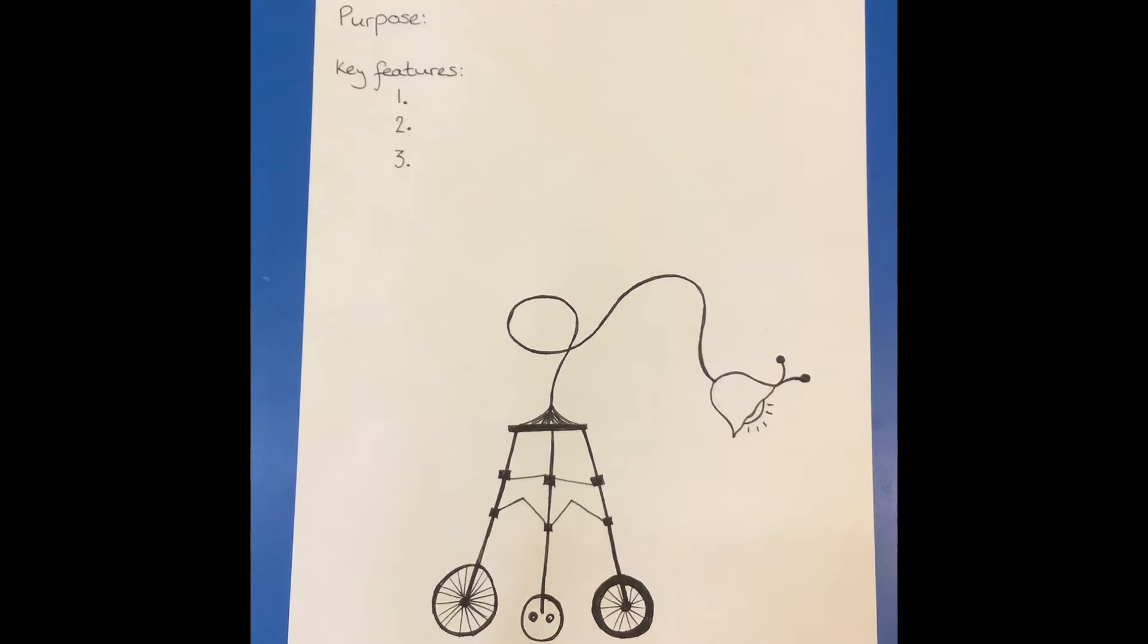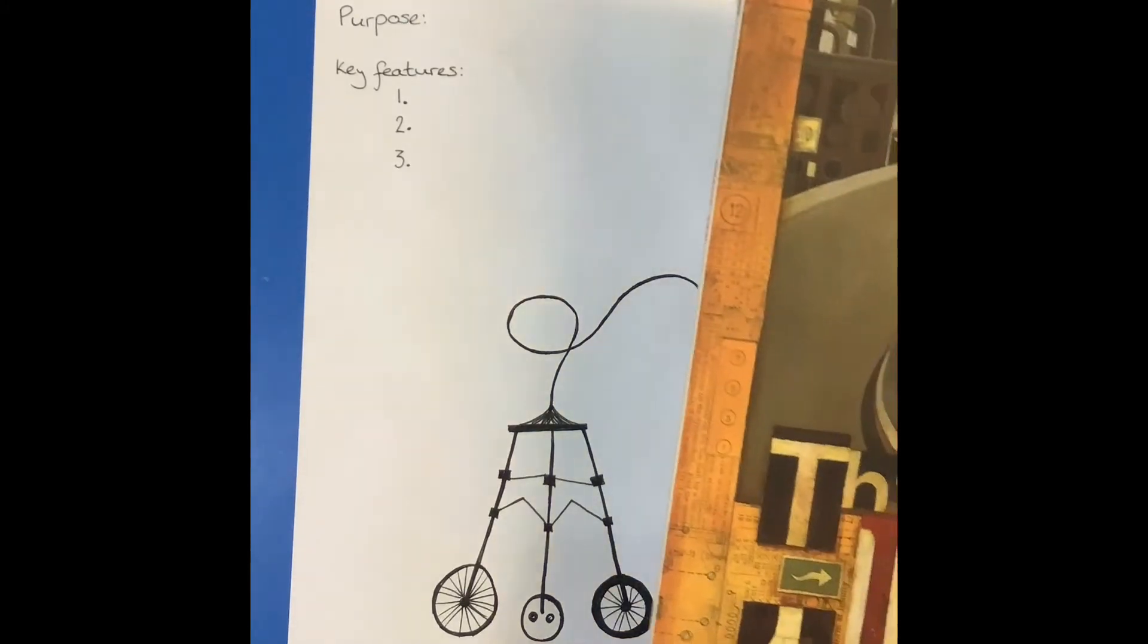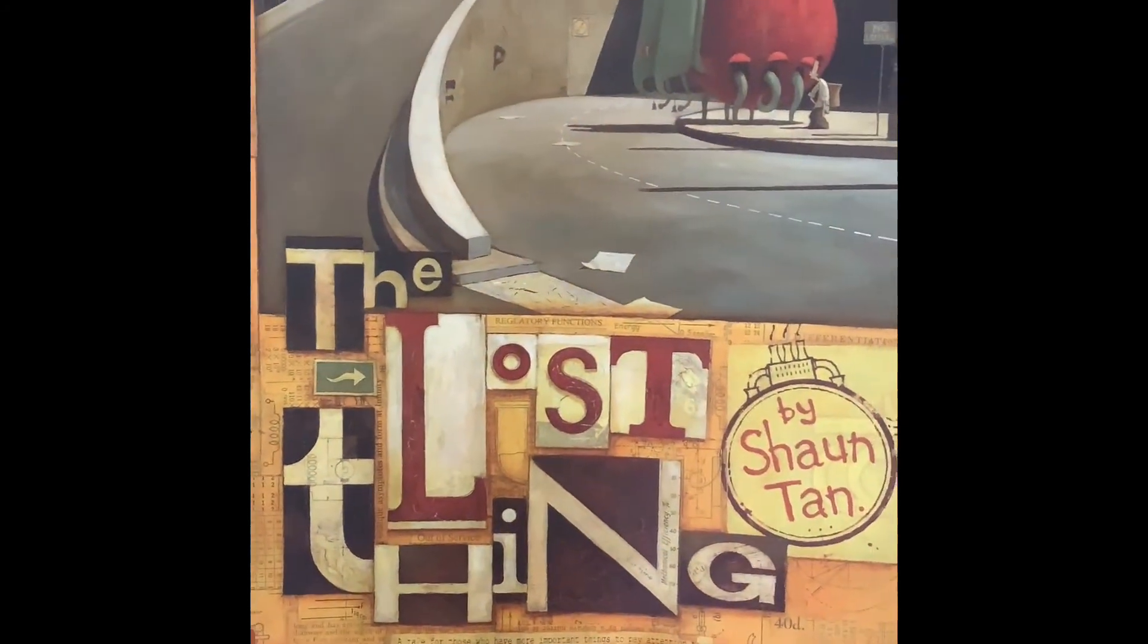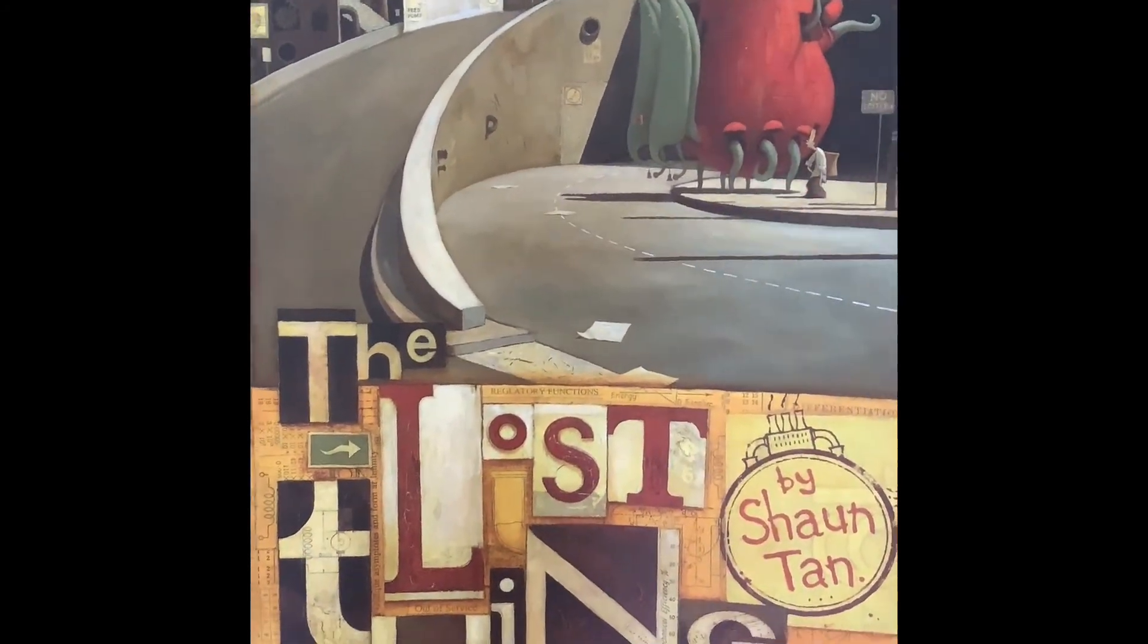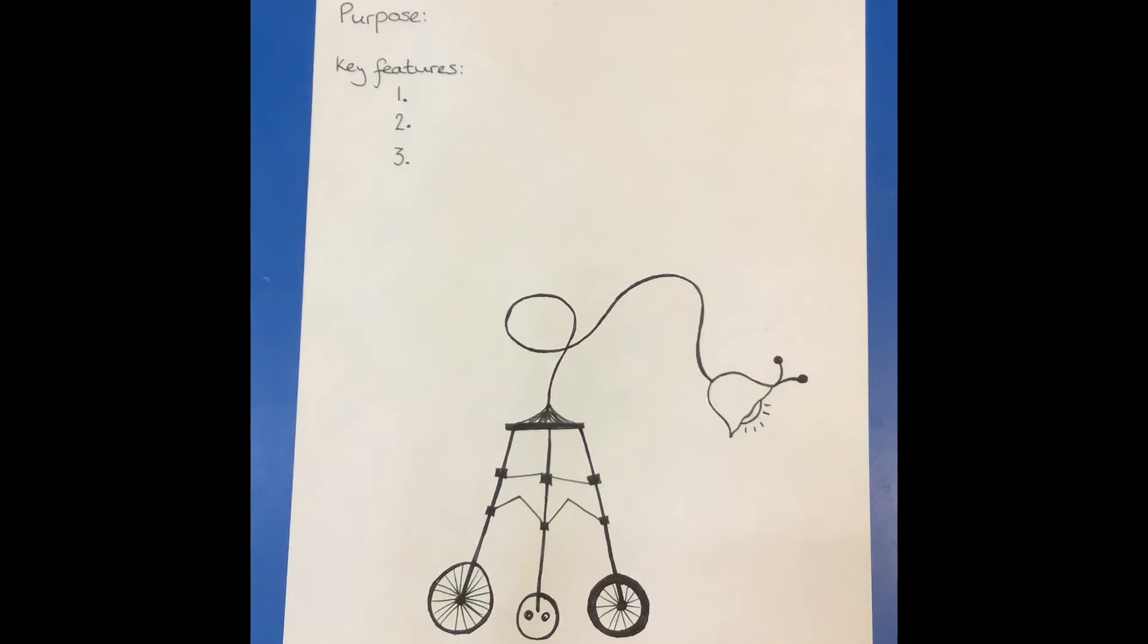Okay, year four, so we are going to have a go at drawing our own lost thing. So you've had a look at the pictures drawn by Sean Tan, his beautiful illustrations and all of his various lost things that he's drawn and what your job is today is to design your own lost thing.